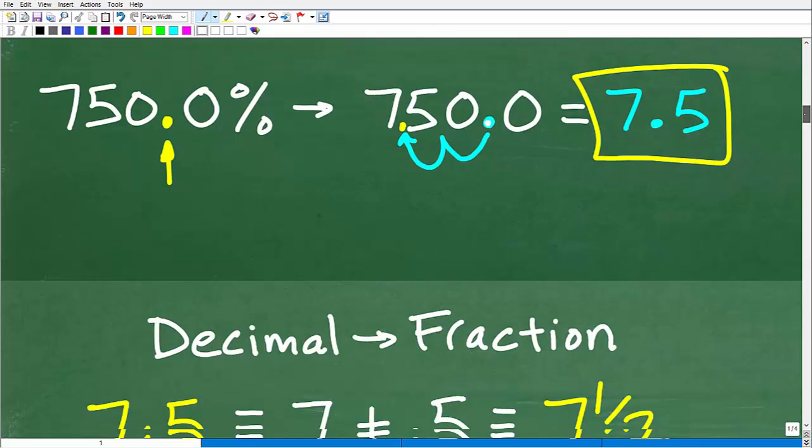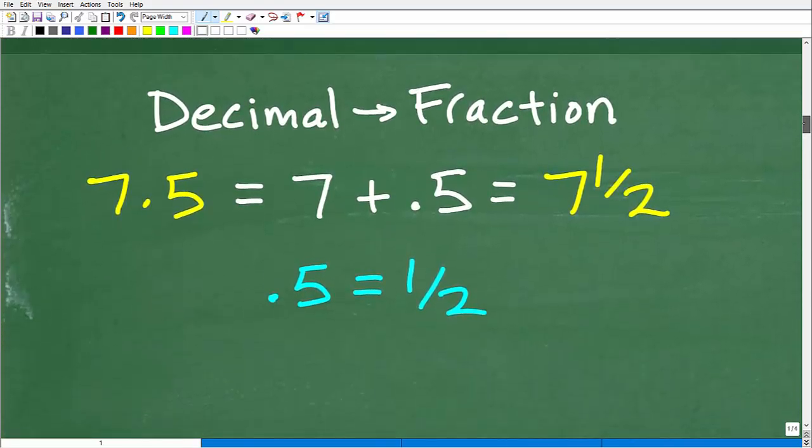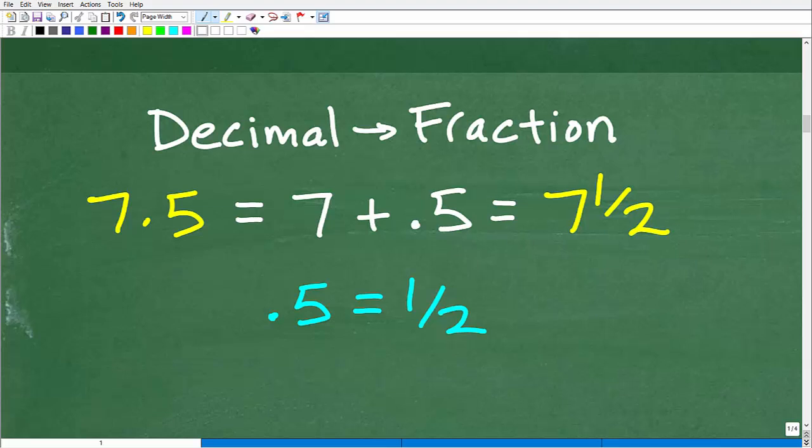Now let's go ahead and talk about decimals to fractions. We know that 750% is the same thing as 7.5. We don't necessarily have to go from a percent to a fraction. We already have the decimal equivalent of 750%. We can just take that decimal and write an equivalent fraction. So 7.5, this is the same thing as 7 plus 0.5. When it comes to some decimals, you should know their fraction equivalent.